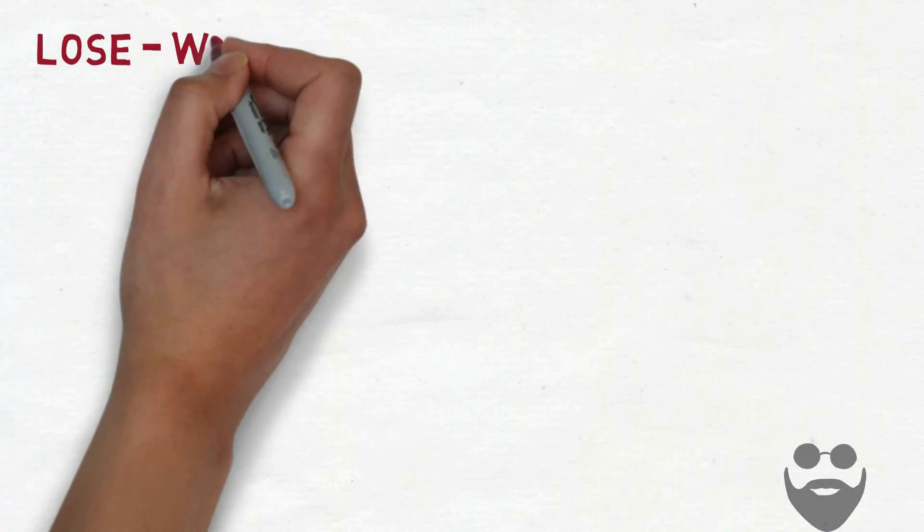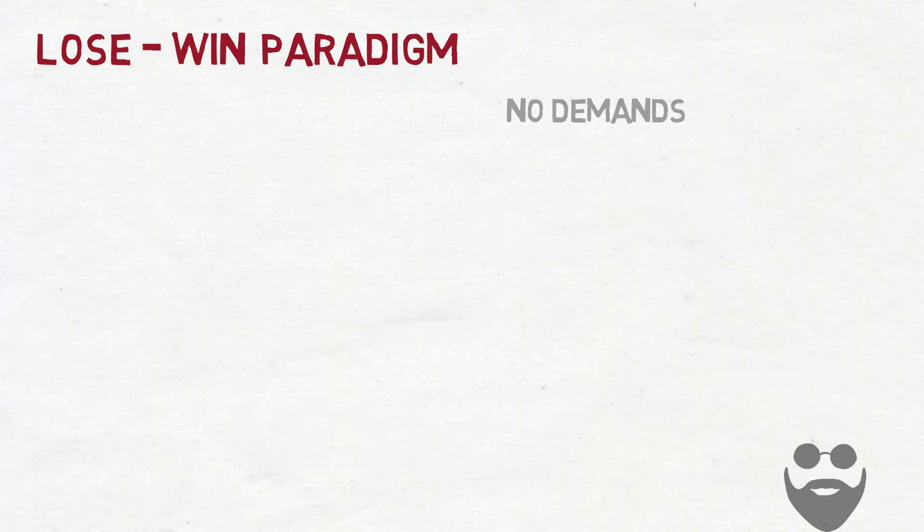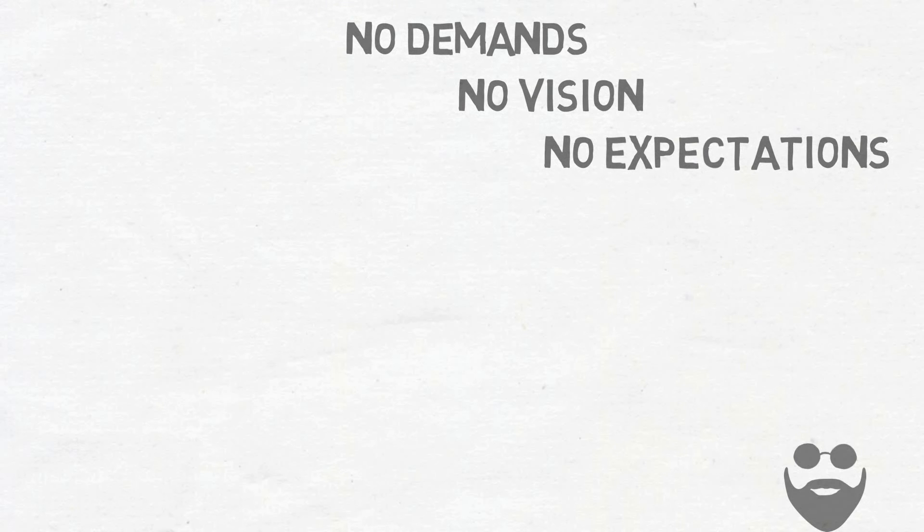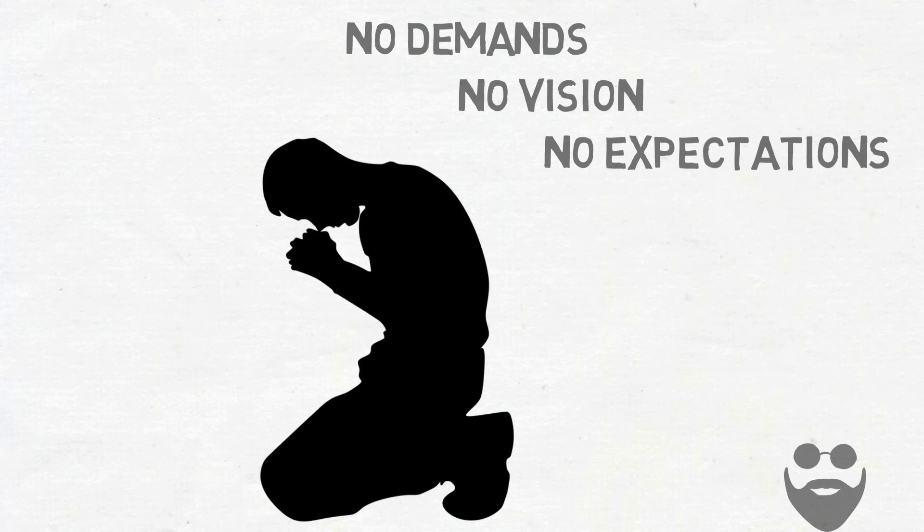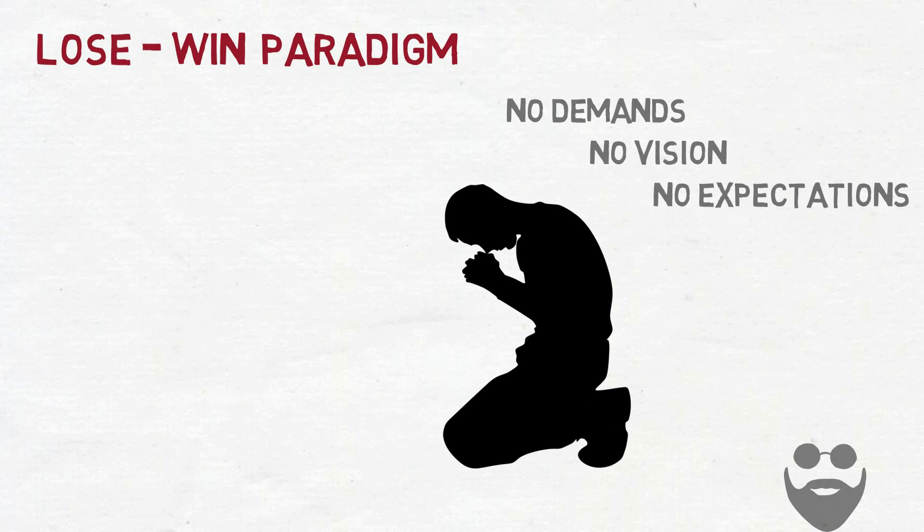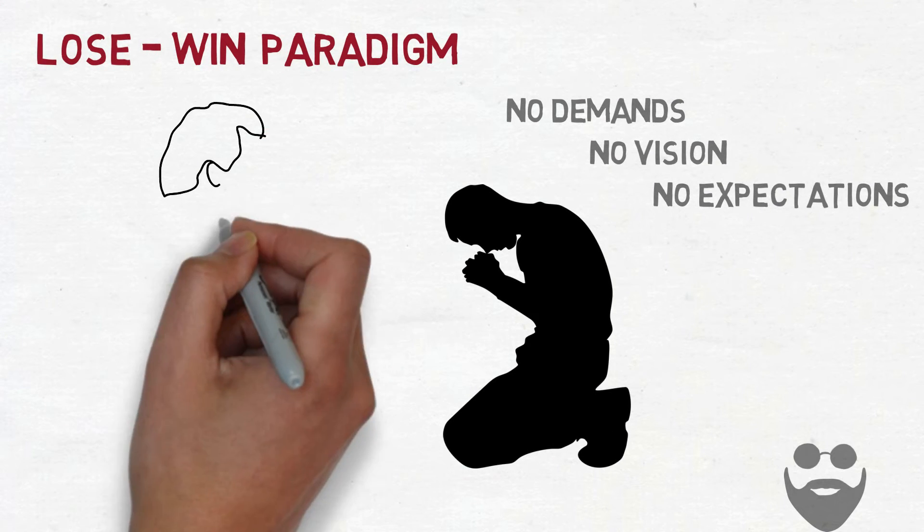Third paradigm is lose-win, which means having no demands, no vision, and no expectations. Lose-win people are quick to appease because they have no courage and no spine of their own. In negotiations, they're always ready to give in. Lose-win means being that nice guy who always finishes last.